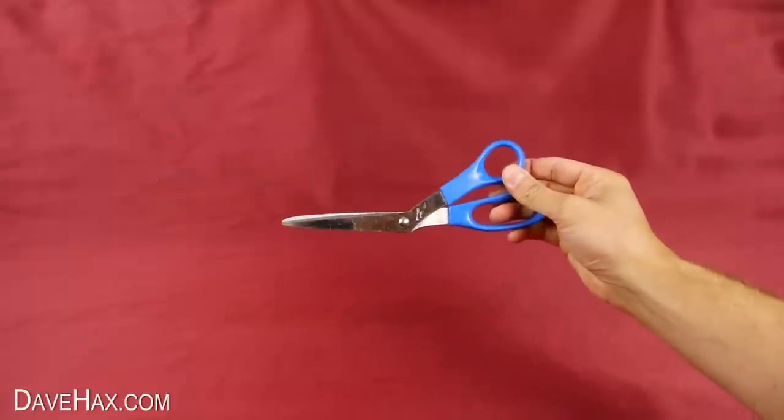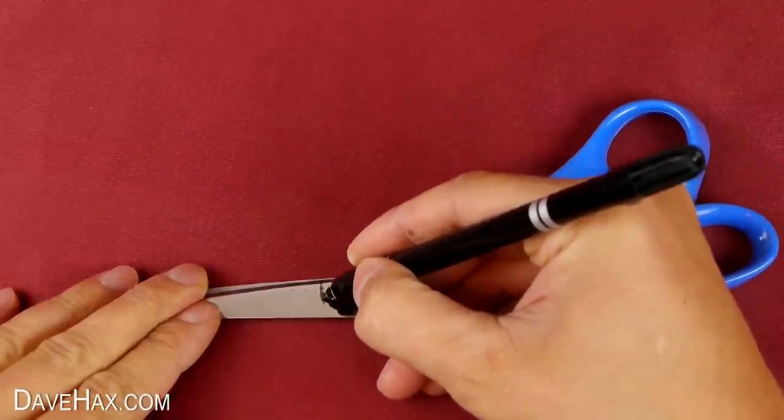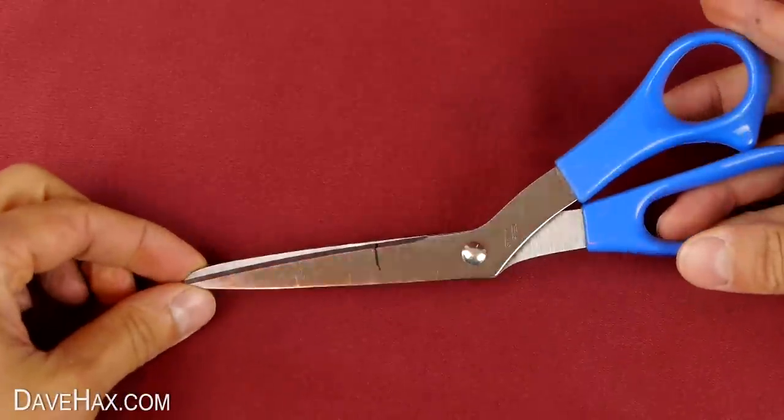Next, take your scissors and draw a mark on them roughly 6cm from the top, like this. This is going to help make sure we get all our cuts the same length.